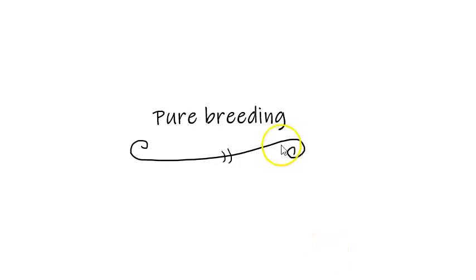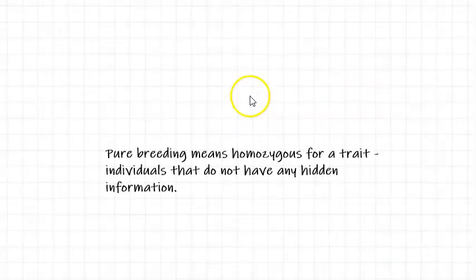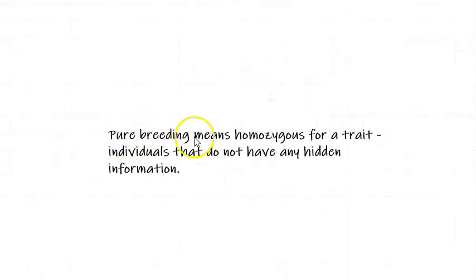Kia ora tātou, welcome to this video where we're going over a common exam question that looks at pure breeding. So what is pure breeding? According to the last two exams that had this question, pure breeding means homozygous for a trait, or individuals that do not have any hidden information. So anything that's homozygous, basically.